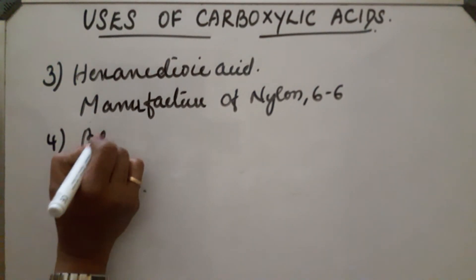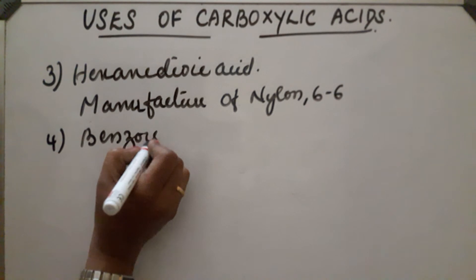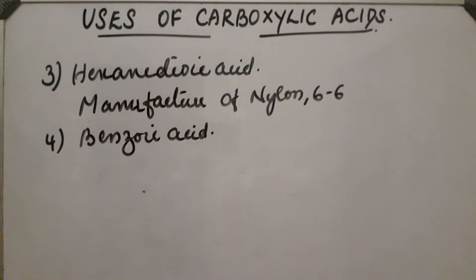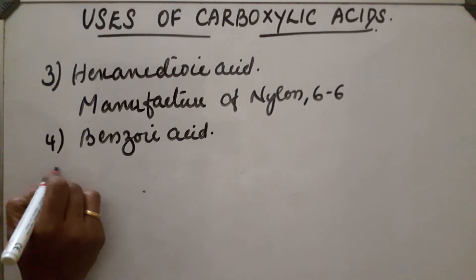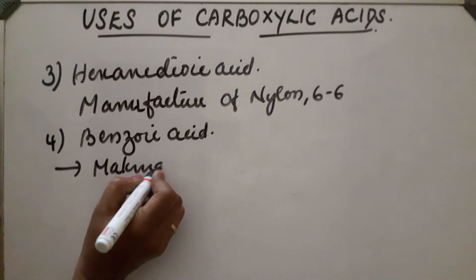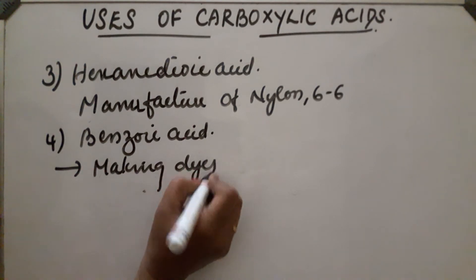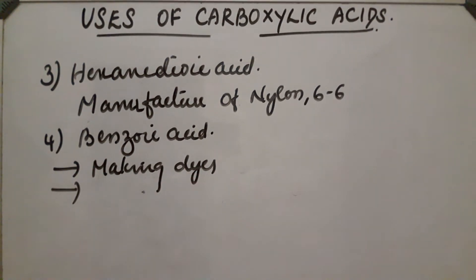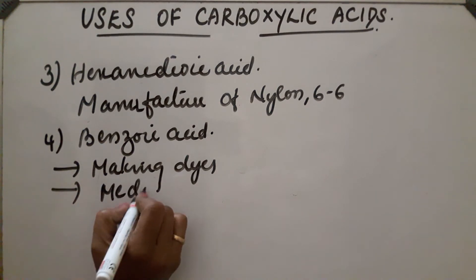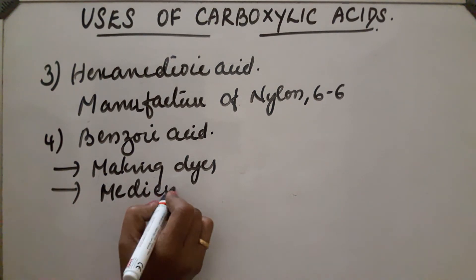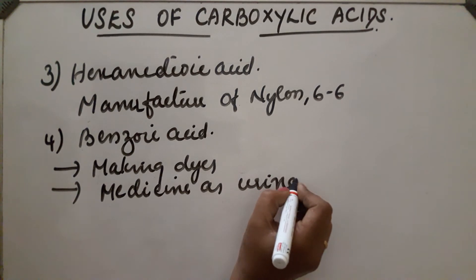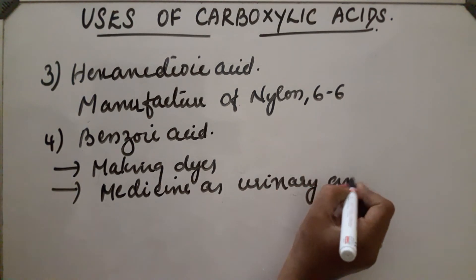Next is benzoic acid. Benzoic acid is used for making dyes. It is also used as a medicine, specifically as a urinary antiseptic.